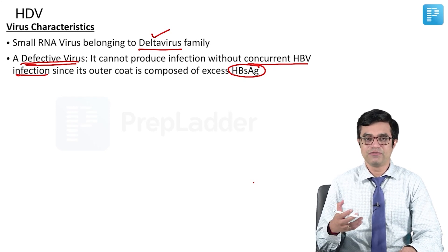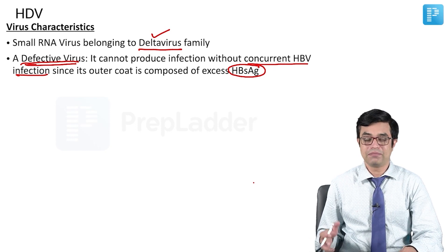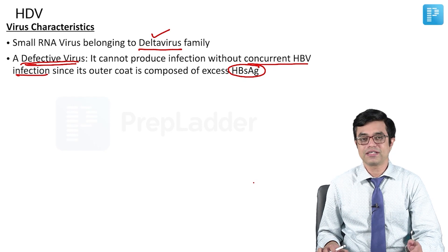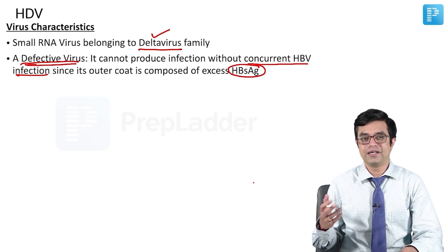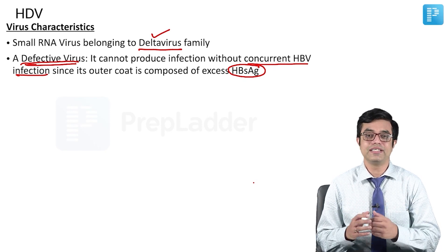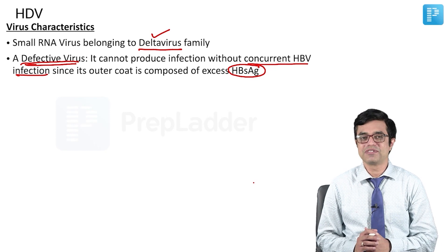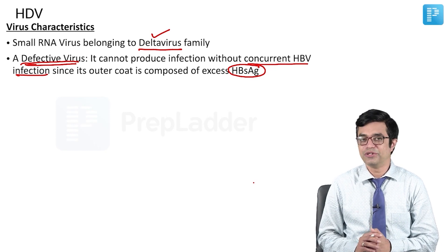As an analogy, think of hepatitis B virus as China — it is big, huge, and its capability of causing damage is more. Think of hepatitis D virus as Pakistan — it is dependent upon China. By itself it is not much, but if there is co-infection by the two and they get together, they can cause serious damage to the host. Not an exact analogy, but these analogies sometimes help you recall in entrance exams.